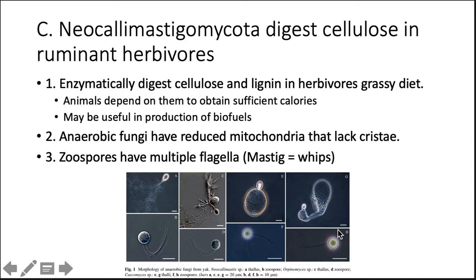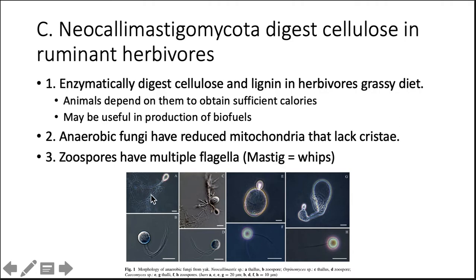The Neocallimastigomycota form the symbiotic relationship mentioned earlier — they can digest cellulose in ruminant herbivores. They actually live in the guts of animals. Because of their ability to digest cellulose and lignin, they are useful to herbivores with grassy diets — animals depend on them to obtain sufficient calories. They can also be used for bioremediation and production of biofuels. These are anaerobic fungi, which makes sense because there's little oxygen in the stomach. They have reduced mitochondria, and those mitochondria actually lack the internal structure cristae. Their zoospores have multiple flagella — the name 'neocallimastig-' means whips, referring to the tiny flagella extended from the zoospore.